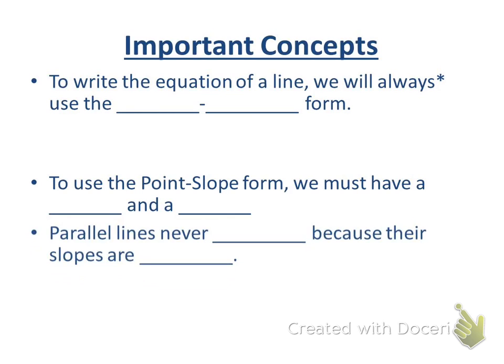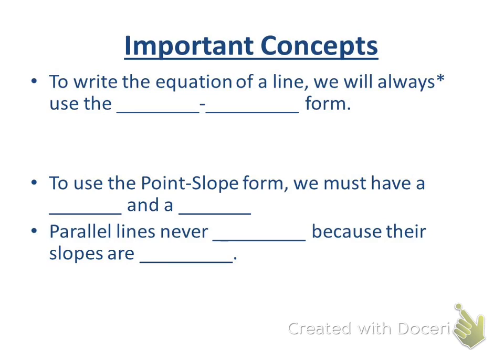Parallel lines never intersect because their slopes are equal. Parallel lines have identical slopes and different Y-intercepts. Systems of equations of parallel lines have no solution because of that. The key thing: parallel lines have slopes that are equivalent.